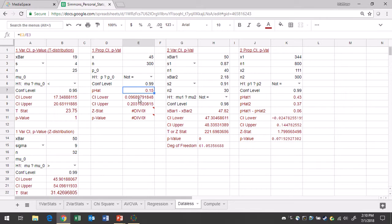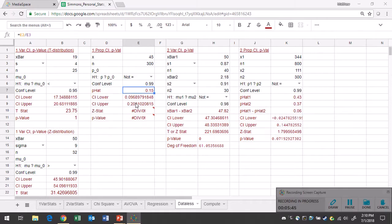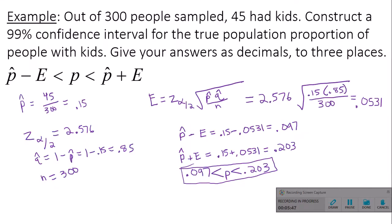And once you do that, you should see that your lower confidence interval limit is going to be 0.097 and then your upper limit is going to be 0.203. And if you look at our information, our answer here, that's exactly what we got: 0.097 and 0.203.